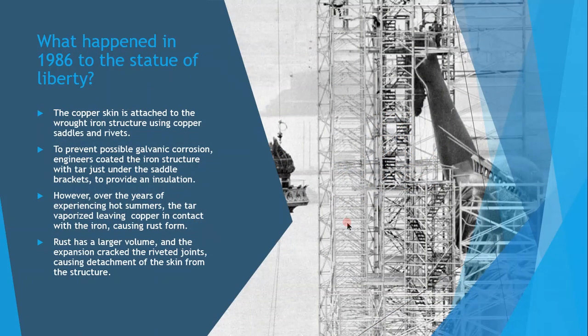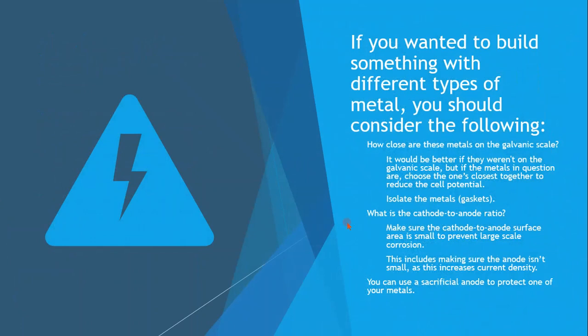A case study is the Statue of Liberty. The copper skin is attached to the wrought iron structure using copper saddles and rivets. Engineers coated the iron structure with tar under the saddle brackets for insulation. However, over years of hot summers, the tar vaporized, leaving copper in contact with iron, causing rust. Rust has a larger volume, and the expansion cracked the riveted joints, detaching the skin. When designing with dissimilar metals, choose those close together on the galvanic scale and isolate them with non-absorbing gaskets if possible.